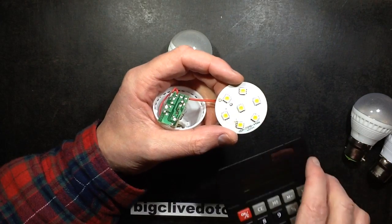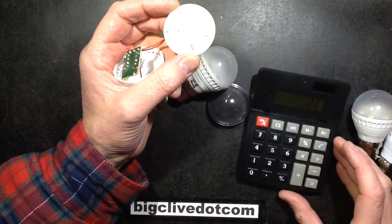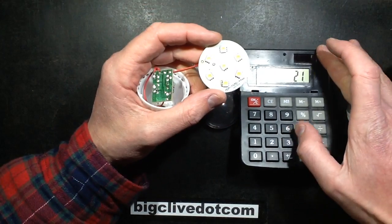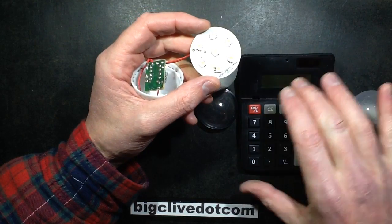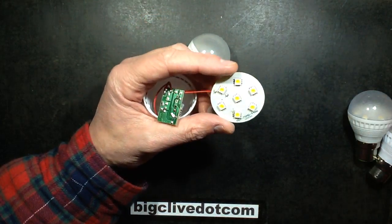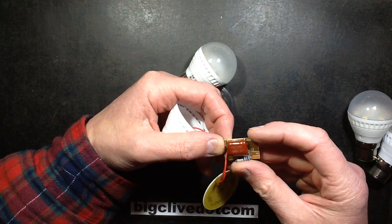And that gives a forward voltage of 21 LEDs times, let's say 3 volts for the LEDs. So that's about 63 volts across each of these PCBs.